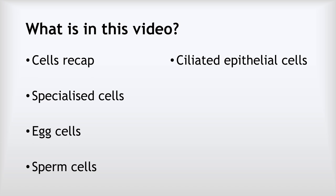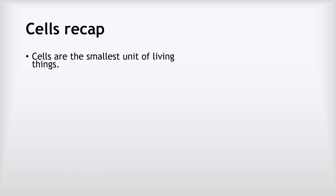In this video, we're going to quickly recap cells, then we'll look at what we mean by specialised cells before we look at three different examples: egg cells, sperm cells and ciliated epithelial cells. So let's start by recapping our knowledge of cells.